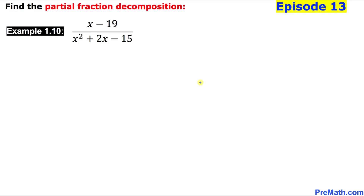Welcome to PreMath. In this video tutorial we are going to find the partial fraction decomposition of this given rational expression, and this is episode 13. So let's look at the denominator of this rational expression: it is x squared plus 2x minus 15, and we can see that this could be easily factored out.